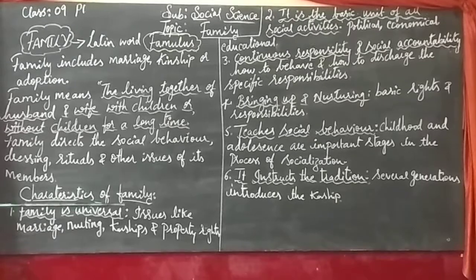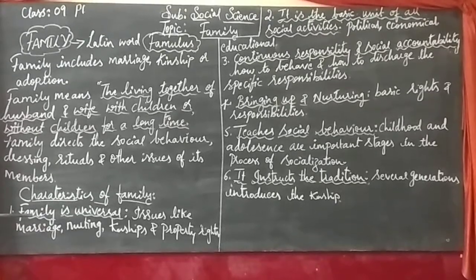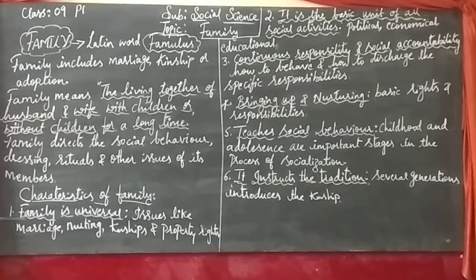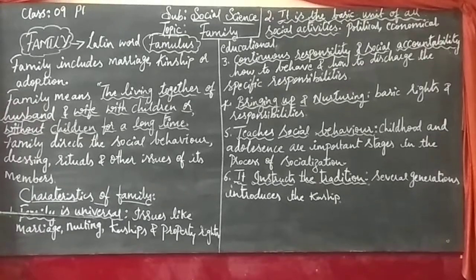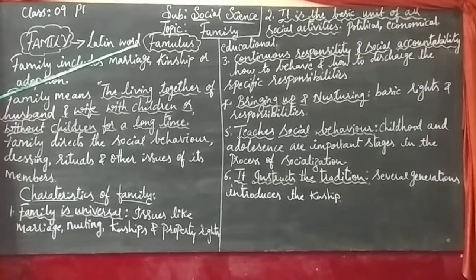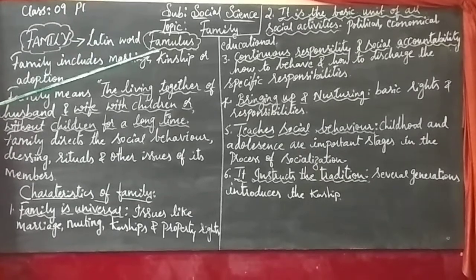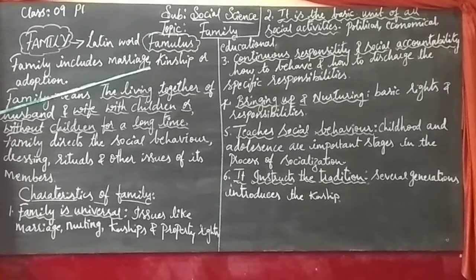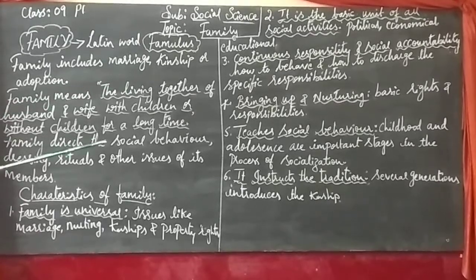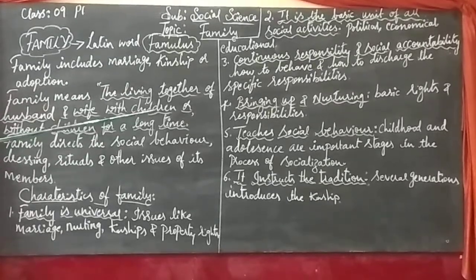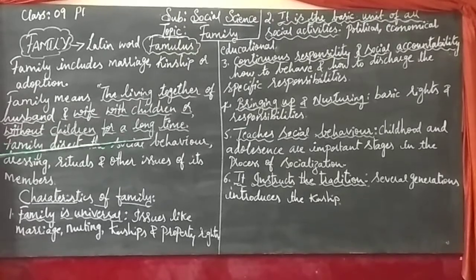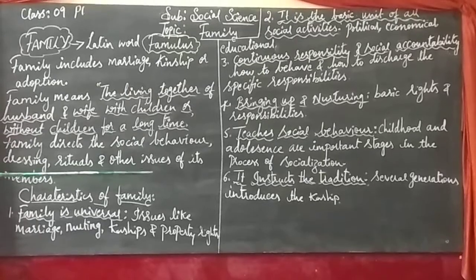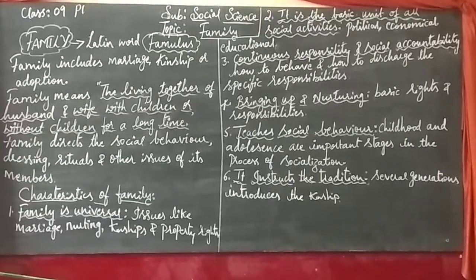Now let us move on to the characteristics of family. We have a total of 6 characteristics of the family. Number 1: Family is universal. Number 2: It is a basic unit of all social activities. Number 3: Continuous responsibility and social accountability. Number 4: Bringing up and nurturing. Number 5: Teaches social behavior. Number 6: It instructs the tradition.